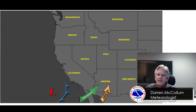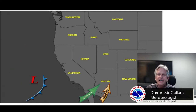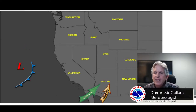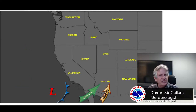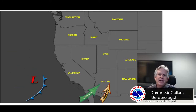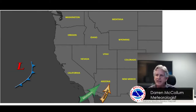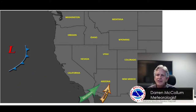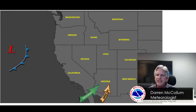So that kind of wraps up the basic patterns that we see during the winter. There's more details than that, but these are the main three patterns that we see. I hope this helps you understand the weather a little more and you found it at least mildly interesting. Once again, this is meteorologist Aaron McCollum with the National Weather Service in Flagstaff, and I thank you for your time.